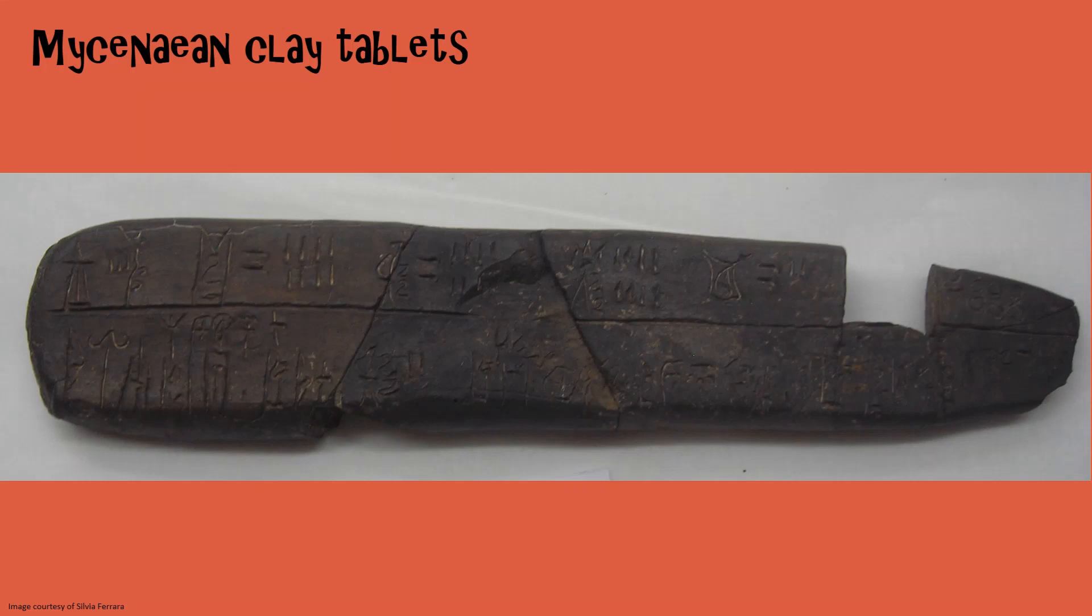Linear B documents have only survived because they were kept in buildings that were destroyed by fire. When clay is fired, it gets harder, and that means that it kept a permanent record for us to read 3000 years later.